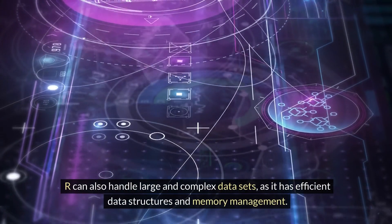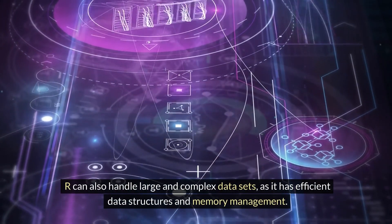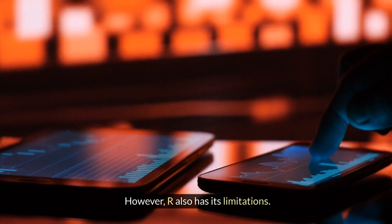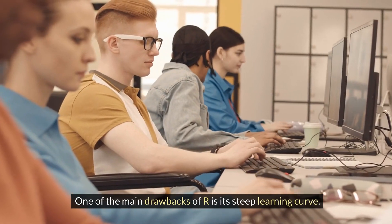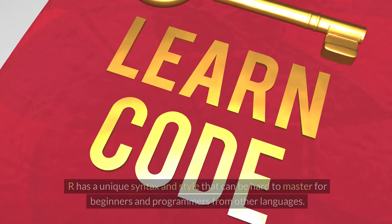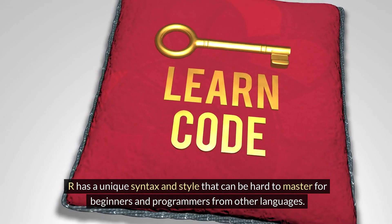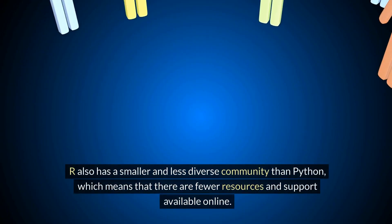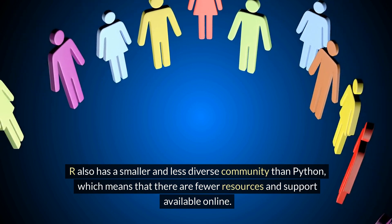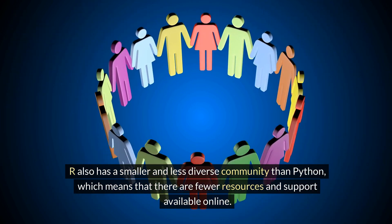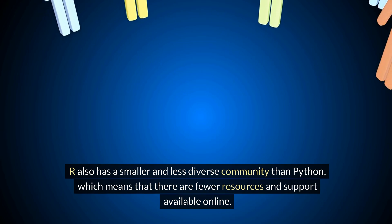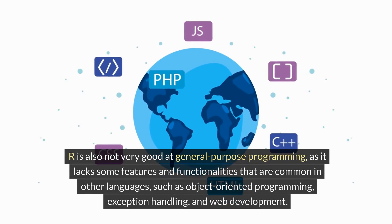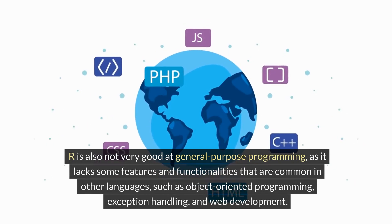R is also a language that encourages thinking in a vectorized and functional way, which can be beneficial for certain algorithmic strategies such as pairs trading, mean reversion, and statistical arbitrage. R can also handle large and complex data sets as it has efficient data structures and memory management. However, R also has its limitations. One of the main drawbacks of R is its steep learning curve — R has a unique syntax and style that can be hard to master for beginners. R also has a smaller and less diverse community than Python, and is not very good at general-purpose programming, lacking features such as object-oriented programming and exception handling.